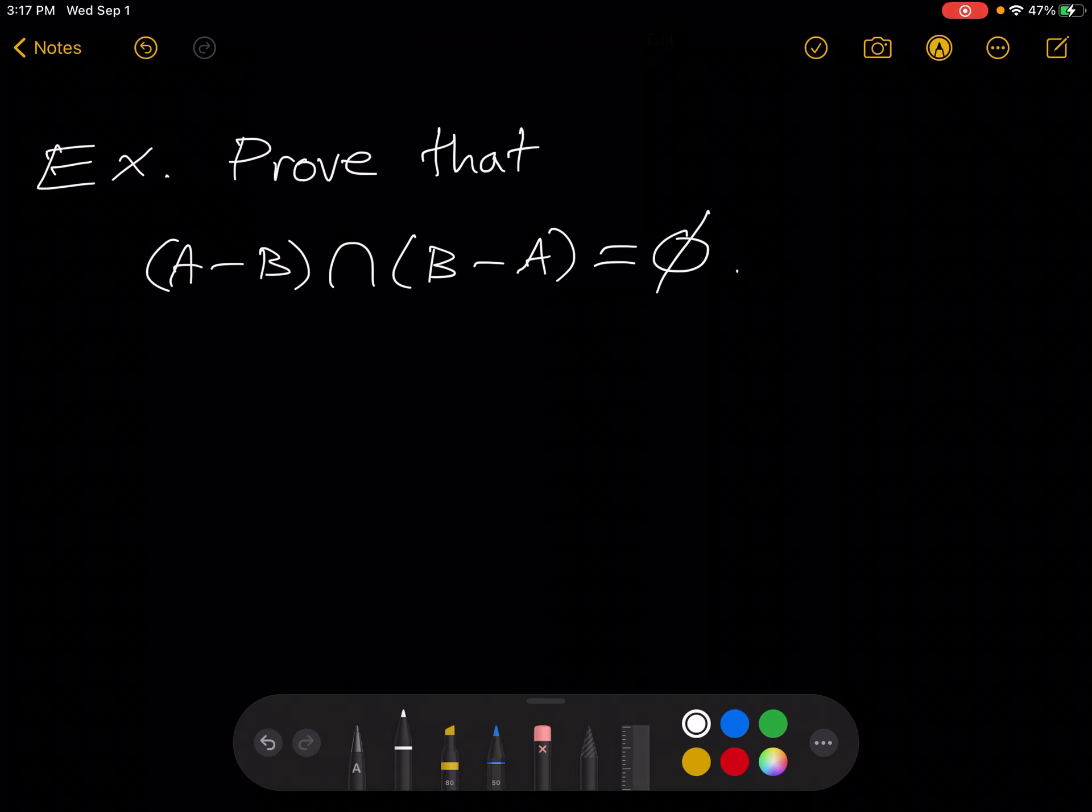Now, one might think we want to show there's subsets of each other or something like that, but that's not going to work because the empty set doesn't have anything in it. So it's hard to put something in there for an element chasing proof, because you can't put anything in there. There's nothing in there. It's the empty set.